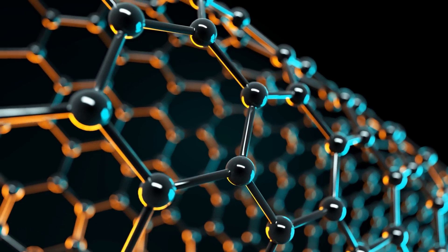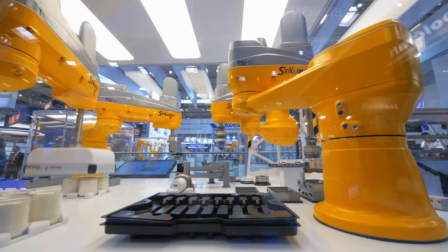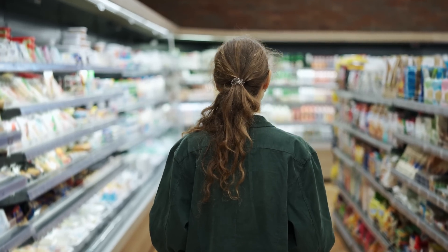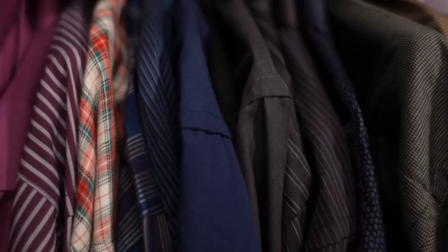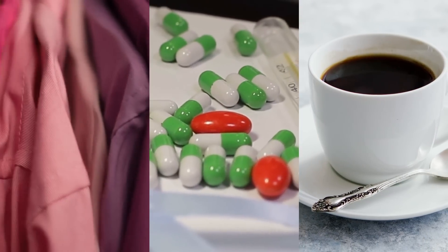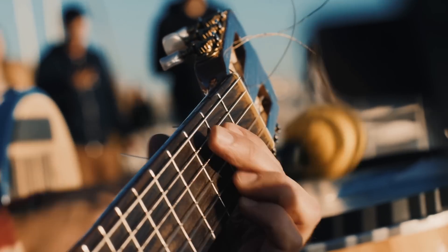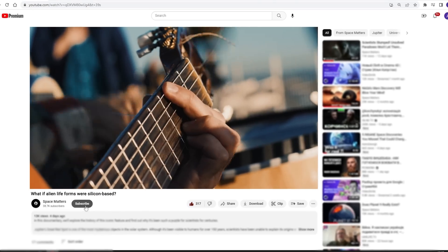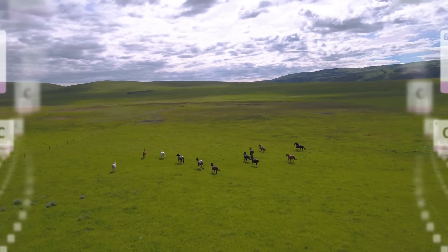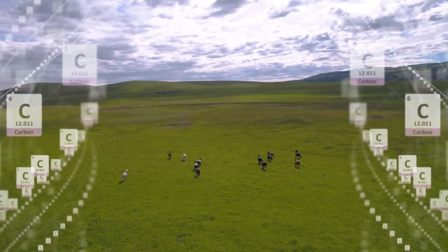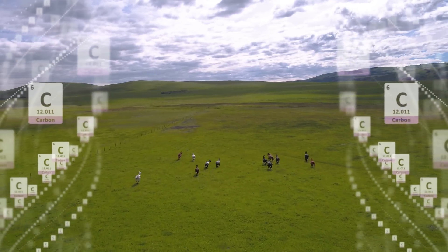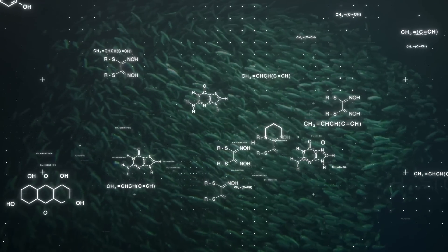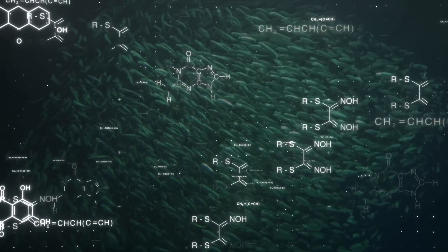Aside from the value of carbon and its compounds in biology, it's important to mention the role it plays in manufacturing. Most of the things you see on a daily basis contain carbon — from clothes, medicine, your favorite cup of coffee, and the house you live in, to musical instruments and the phone or laptop on which you're watching this video. Carbon's chemical versatility and ability to build huge chains with other elements makes it practically indispensable.